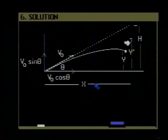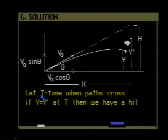The problem asks us to prove that if the gun is aimed at the monkey and if the monkey drops when the gun is fired, the monkey will be hit. What does a proof constitute in this case? Suppose we let T be the time when the paths cross, when the bullet crosses the path of the monkey. If Y is equal to Y' at that time, then we have a hit. So if we could prove that Y equals Y' at time T, we would have proven what we've asked to prove.